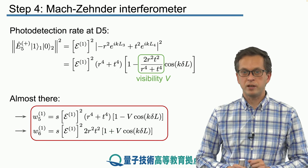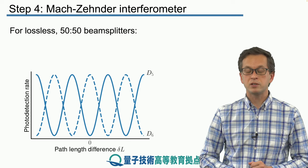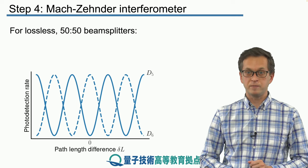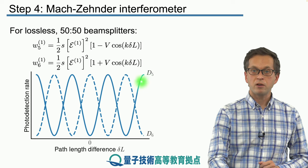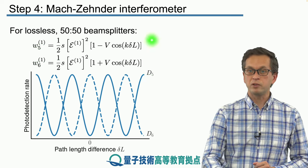So this was a lot of mathematics. Now let's see what actually happens when we consider a lossless 50-50 beam splitter. So in that case our expressions for W1 of 5 and 6 simplify to the following.